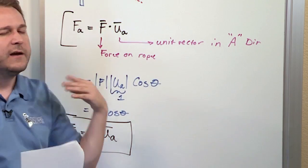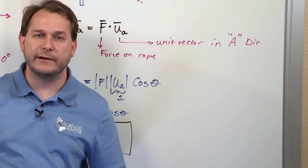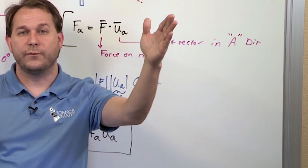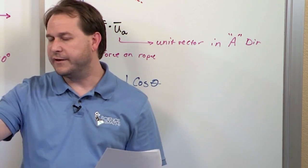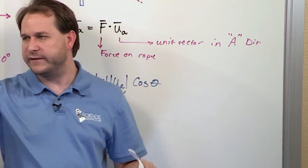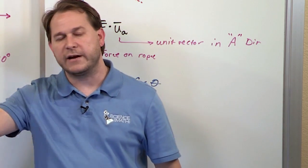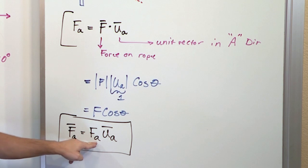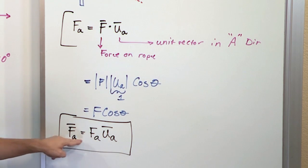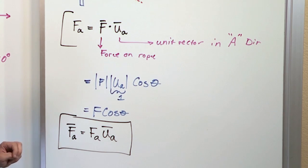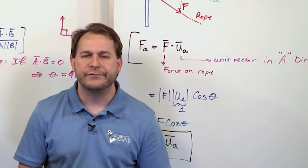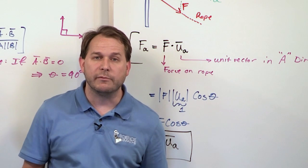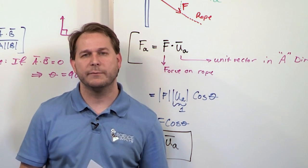So the bottom line is there are two main things we use the dot product for right now: first, finding the angle between two vectors using the inverse cosine of A dot B divided by the product of their magnitudes; second, finding the component of a force in a given direction by dotting the force vector with a unit vector in that direction. Let's go on to the next lesson, do a real problem, and you'll get the hang of when to use the dot product to solve mechanics problems.